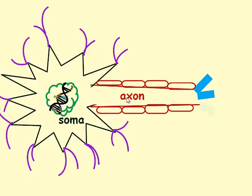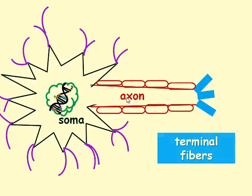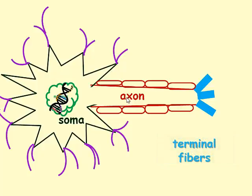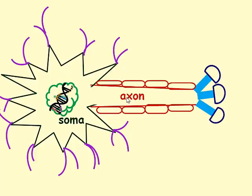When the myelin helps the action potential speed down the axon, it goes to the terminal fibers, colored solid light blue. These are sometimes called axon fibers. At the ends of the terminal fibers, we see little mushroom-like shapes called bouton in dark blue. This part of the neuron was named because bouton is French for buttons. They appear to look like buttons to the person who named this part of the neuron.